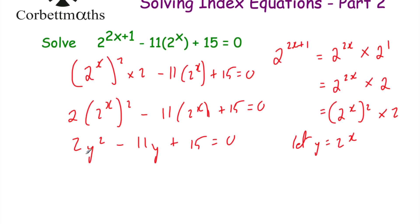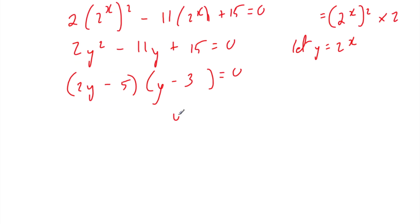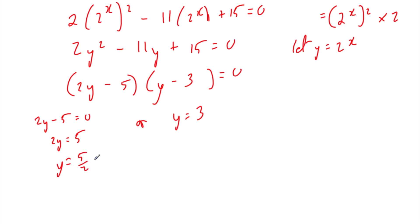We can factorize this quadratic. We've got 2y and y in the fronts of the brackets, looking for two numbers that multiply to 15 and give minus 11y when expanded — putting minus 3 and minus 5 works. So y equals 3, or from 2y minus 5 equals 0 we get y equals 5 over 2, or 2.5. Since y equals 2 to the power of x, we have 2 to the power of x equals 3 or 2 to the power of x equals 5 over 2.